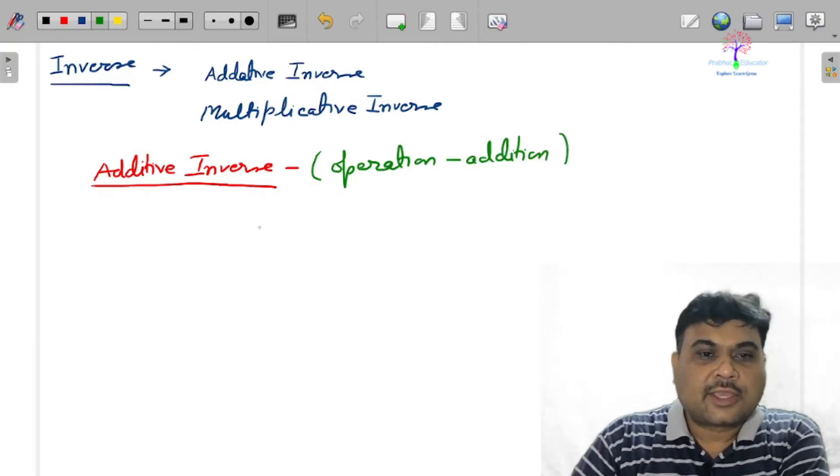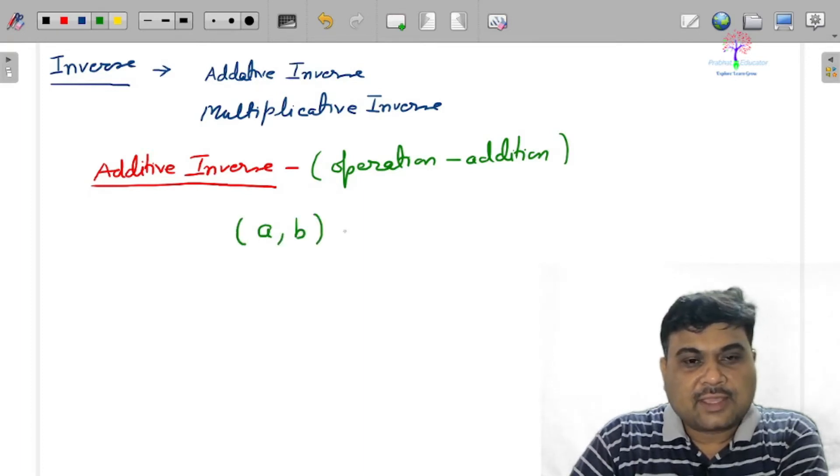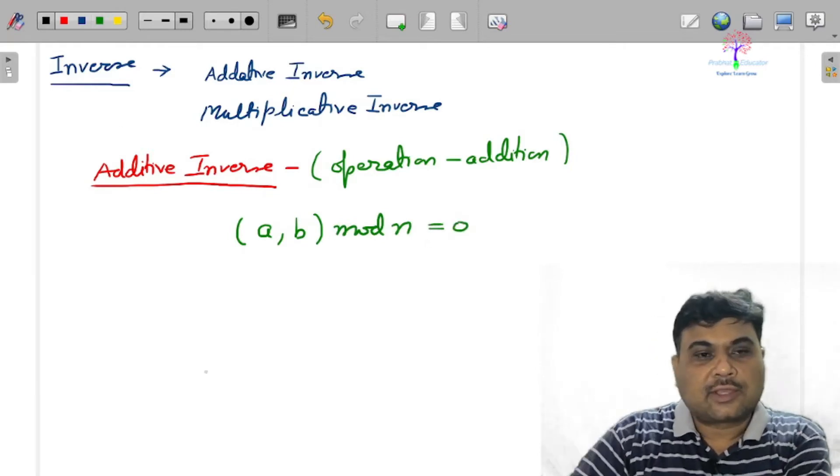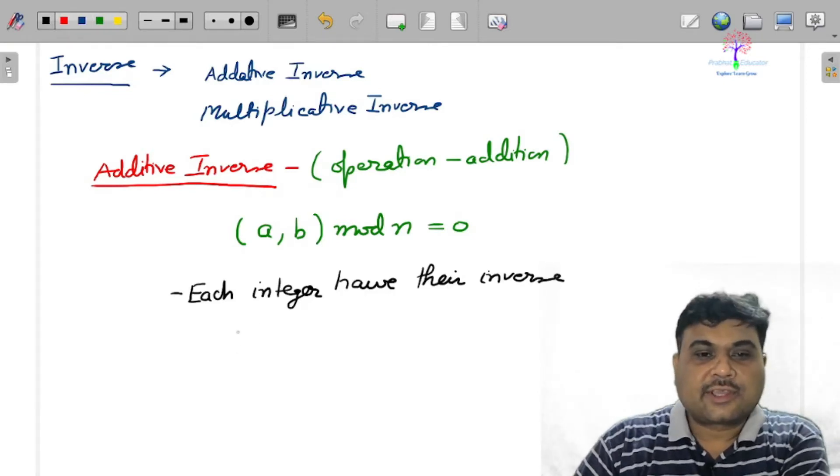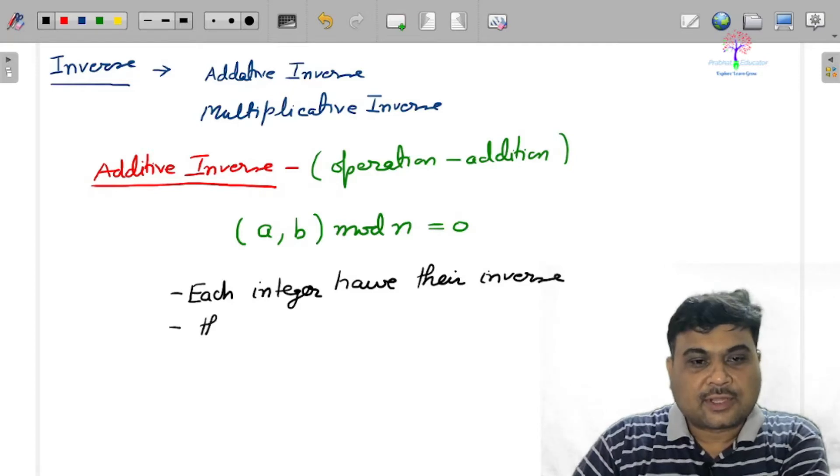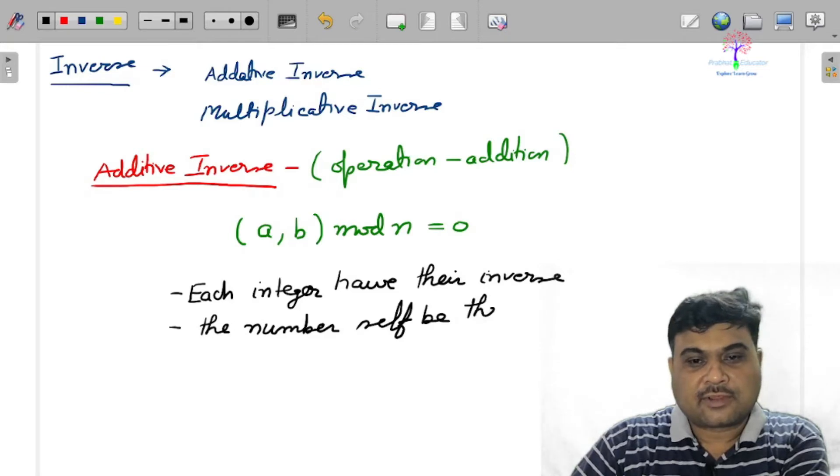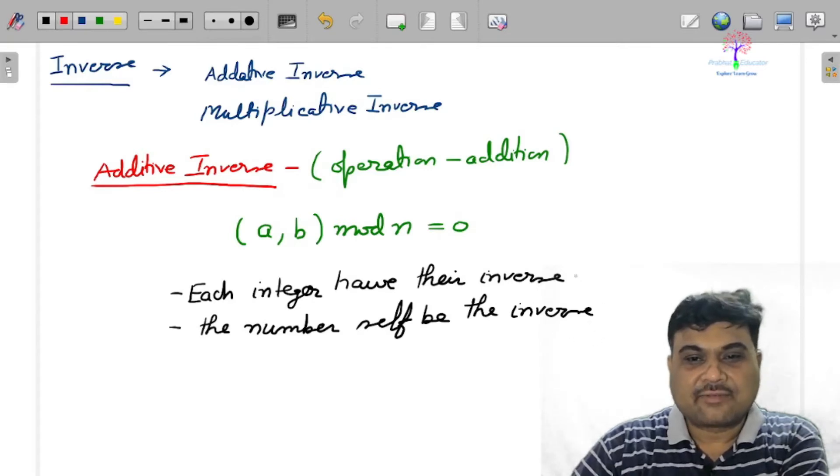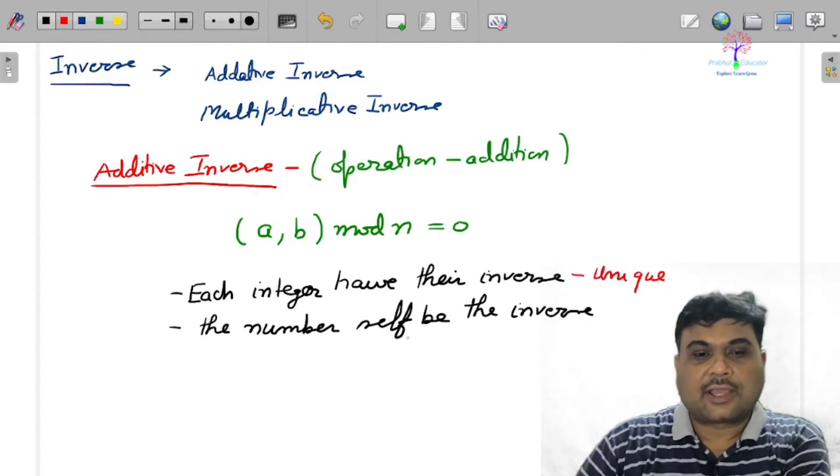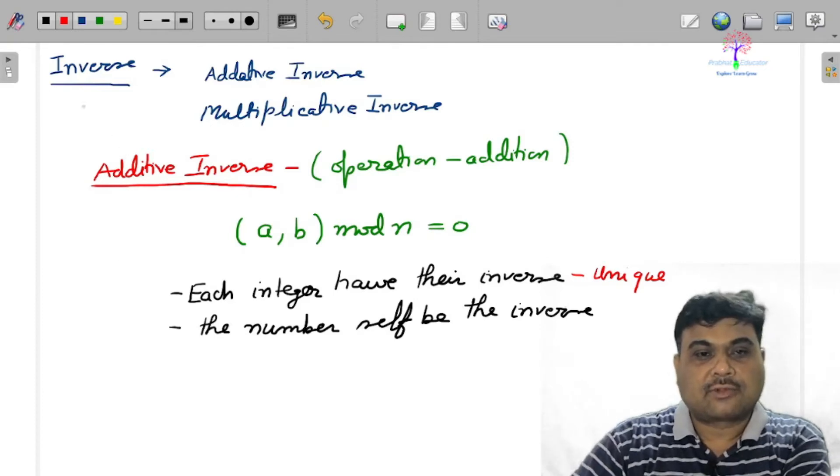Additive inverse means the operation is related with addition. We are using arithmetic modulo. What is the meaning is this: if there are two integers a and b, and if we are saying a and b are inverse of each other, then a plus b mod n is equal to 0. In the additive inverse, each integer has their inverse. The number itself may be the inverse, and it is unique.